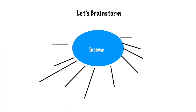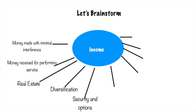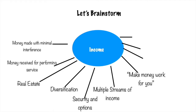We have our topic, which is income. Let's brainstorm what we've been learning about income. We talked about money made with minimal interference, money received for performing services, real estate, diversification, security and options, multiple streams of income, make money work for you, nine-to-five job, investments, salary, tips and wages.